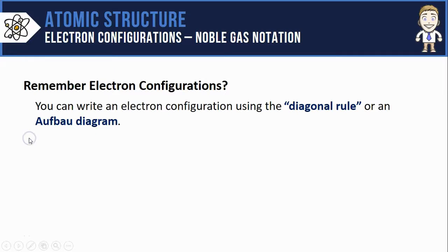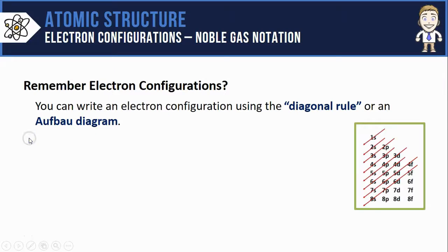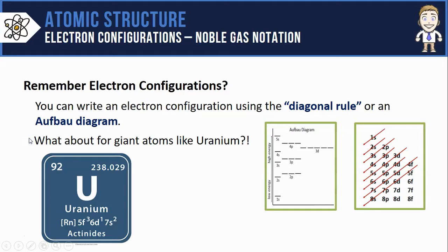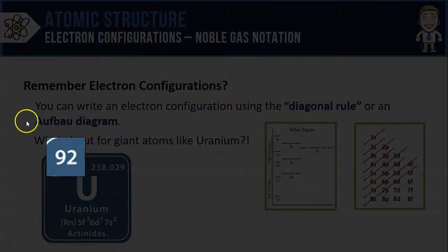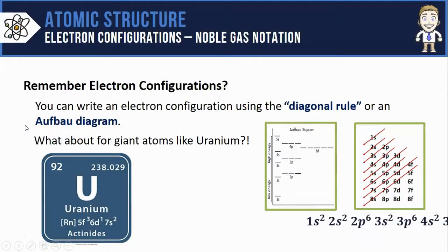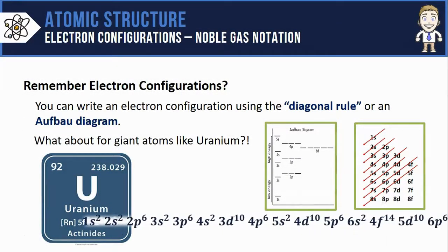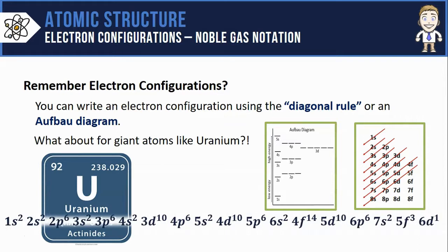First, remember that you can write electron configurations using the diagonal rule or an Aufbau diagram, and while they both work pretty well, what about if you have to do it for giant atoms like uranium? It's got 92 electrons. The whole configuration stretches from 1s2 all the way up to 6d1. It takes a really long time and gets super annoying.